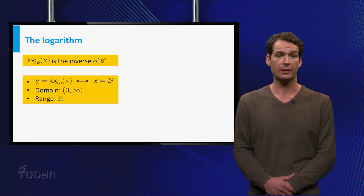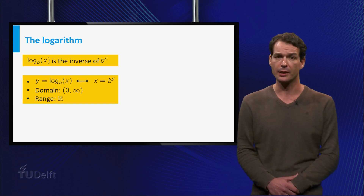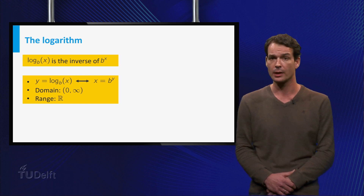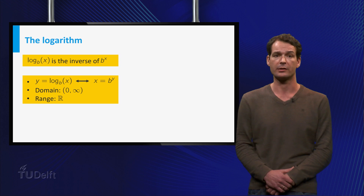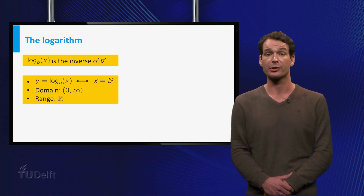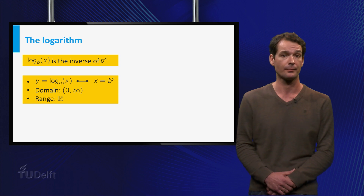From what we know from inverse functions, we have the following properties. Log base b is the inverse of b to the power x, so y is equal to log base b of x precisely when b to the power y is equal to x.